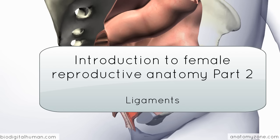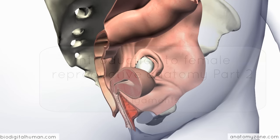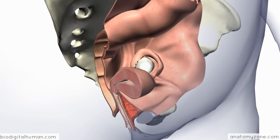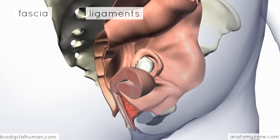In this next part of the tutorial, I'm going to take a look at some of the other details of the female reproductive system. We're going to build on what we looked at before and fill in some of the gaps. In the last tutorial, I mentioned that there were some ligaments which support the viscera and attach from some of the pelvic organs to the pelvic side walls. In this first part, I'm going to talk about the fascia and the ligaments associated with the female reproductive tract.